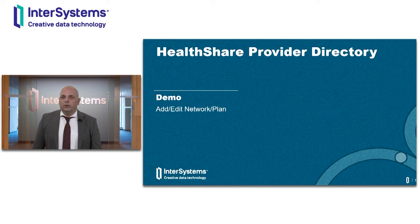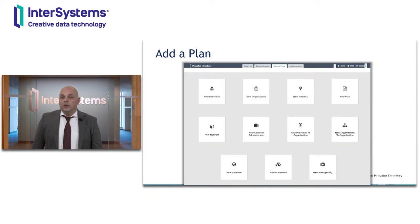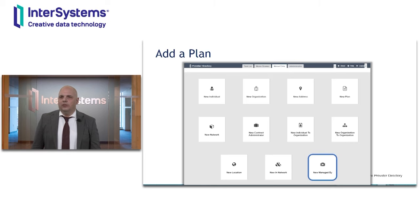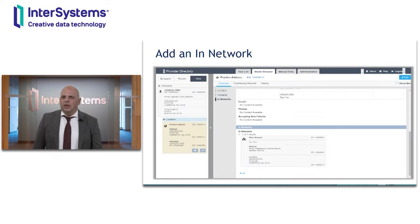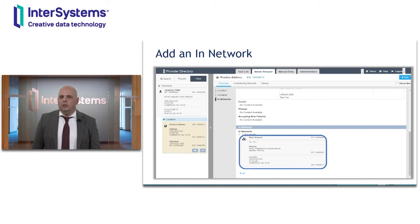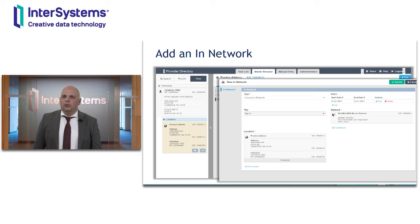Let's take a look at some of the new add and edit network plan features. Under manual entry, we have introduced the ability to add plan, network, contract administrator, in-network, and managed-by relationships. If we click on plan, we can add a new plan, and here we see the information we collect — region, business year, effective dates, and market coverage. In this release, we updated our plan type and meta level value sets to be consistent with the PDX DaVinci PlanNet standard. In the master browser, relationships can be added for provider Fred Johnson. If we examine his practice location, we can see he is currently participating in one network. By using the add button, we can create a new in-network relationship to this provider's practice, define the tier level, indicate the network type, and apply a date range to define the period of participation.